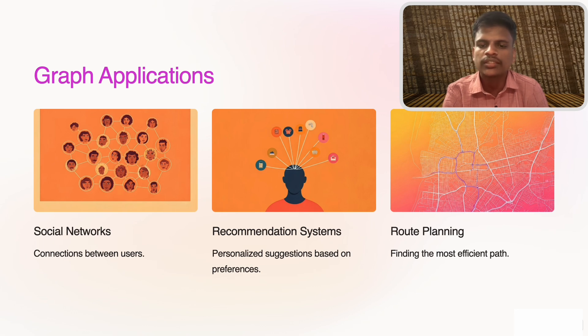Recommendation systems: sites like Amazon or Netflix use graphs to connect users with items they might like based on similar users' preferences.